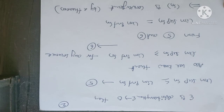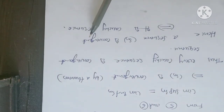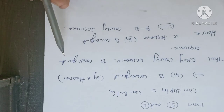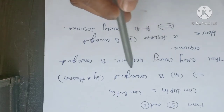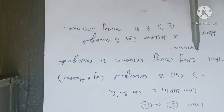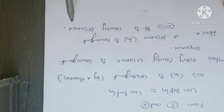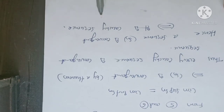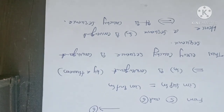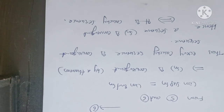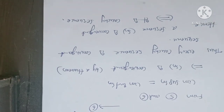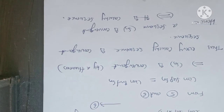So every Cauchy sequence is a convergent sequence. Hence, Sn is convergent. We have proved: a sequence Sn is convergent if and only if it must be a Cauchy sequence, and if it is a Cauchy sequence, then that sequence must be a convergent sequence. This is the Cauchy general principle for convergence of a sequence — an important theorem in real analysis.